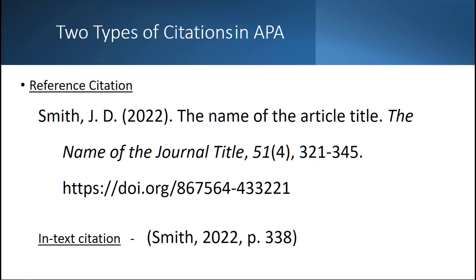There are two types of citations in APA. The first is the reference citation, which appears at the end of your paper on a separate piece of paper, or at the bottom of your discussion post. In this example we have a scholarly journal article.